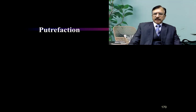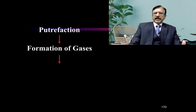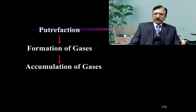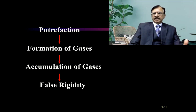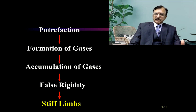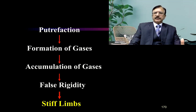Putrefactive stiffening: when putrefaction sets in, there is formation of gases. Because of the accumulation of these gases and their pressure effects, there is false rigidity of the whole body — stiff limbs — and this is putrefactive stiffening. This is not due to the routine rigor mortis changes, but because of the accumulation of putrefactive gases.